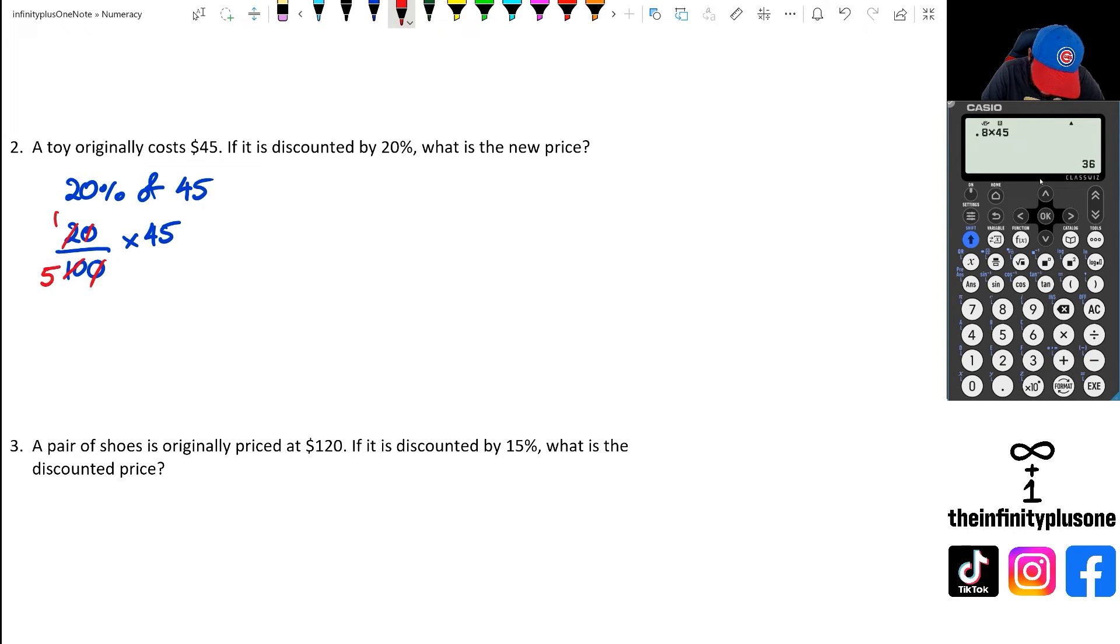And what I'm left over with is 45 over 5, which equals to 9. So I've got to take away 9 from $45. So I go $45 take away $9, and that's equal to $36.